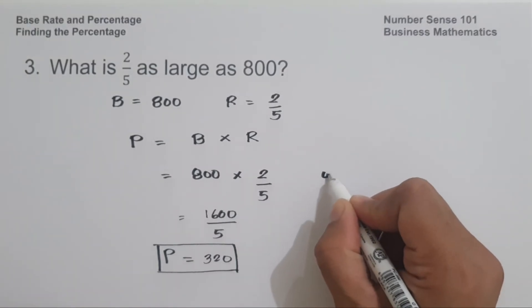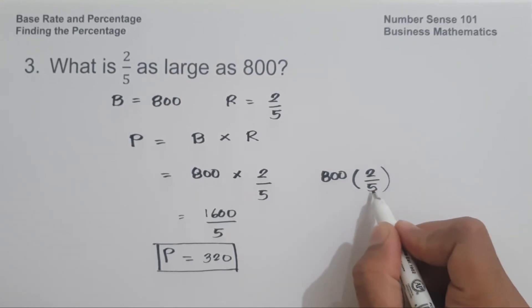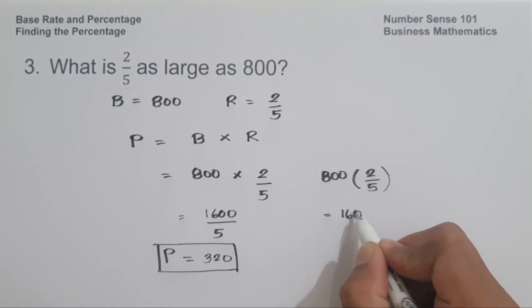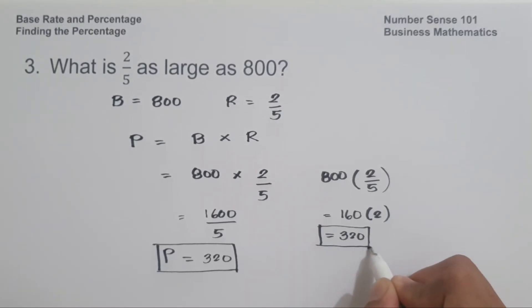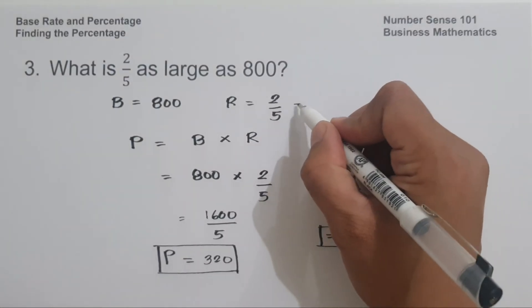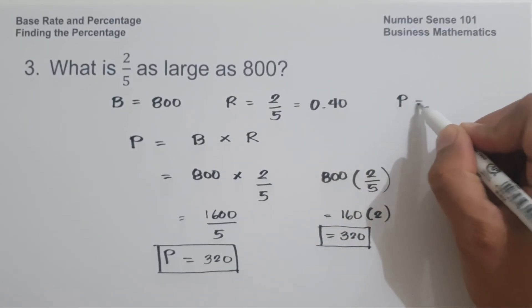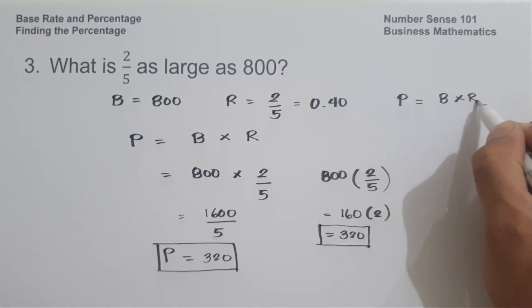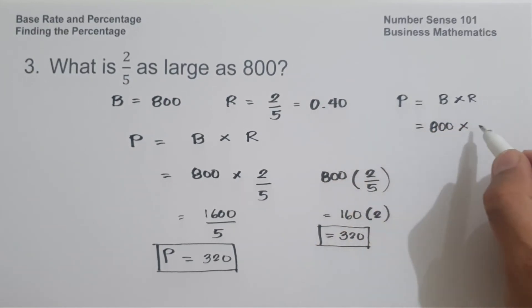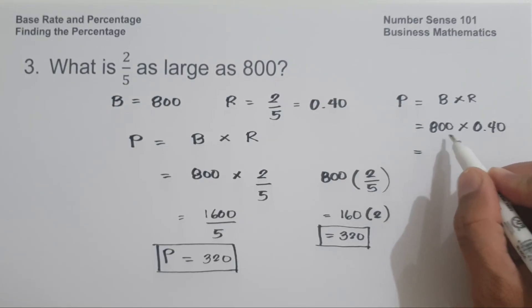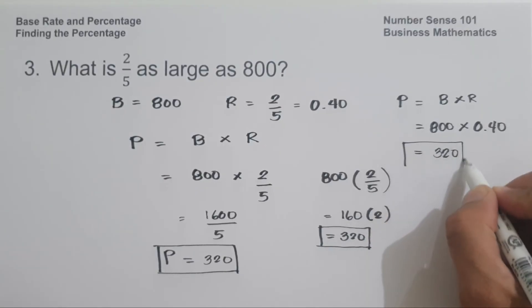Alternatively, you can solve this as 800 times 2/5 by dividing 800 by 5 first, which gives 160, then multiplied by 2, giving 320. Or, if you divide 2/5, it equals 0.40, so percentage equals 800 times 40% or 0.40, and we arrive at the same answer of 320.